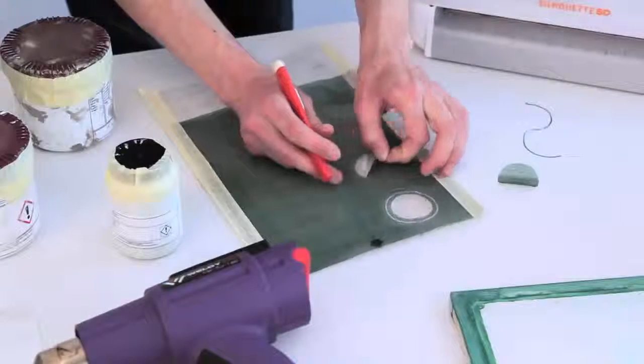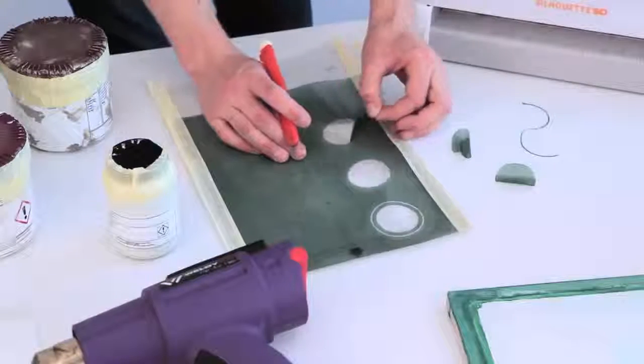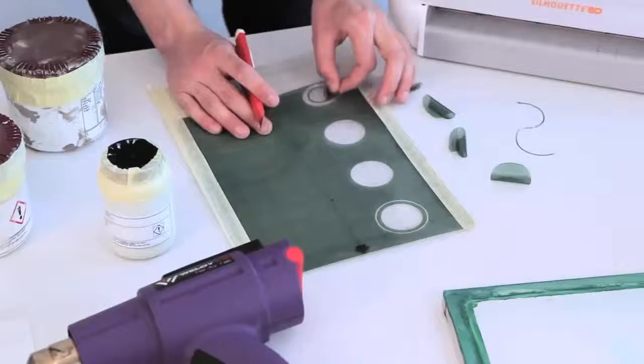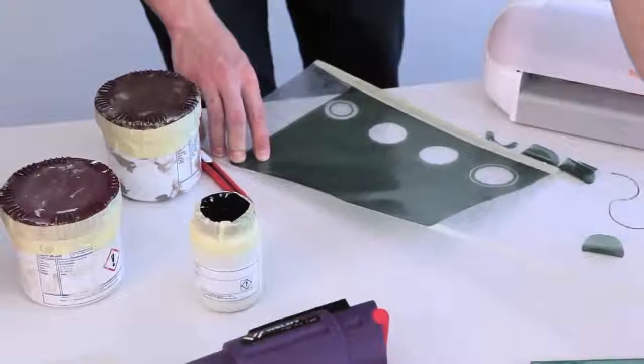Once we have our designs, we can begin cutting them from the film. This is a water-soluble film that adheres to the screen. You can use a cutting machine like here, or you can also cut these by hand. Once we've cut out our design, we can apply it to the screen.